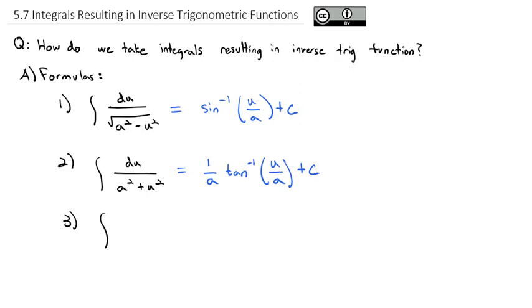And the third formula we're going to recognize is the integral du over the absolute value of u times the square root of u squared minus a squared. That one, similar to tangent, we'll have to divide by a to get rid of that a issue. And then we'll have the secant inverse of u over a plus a constant.